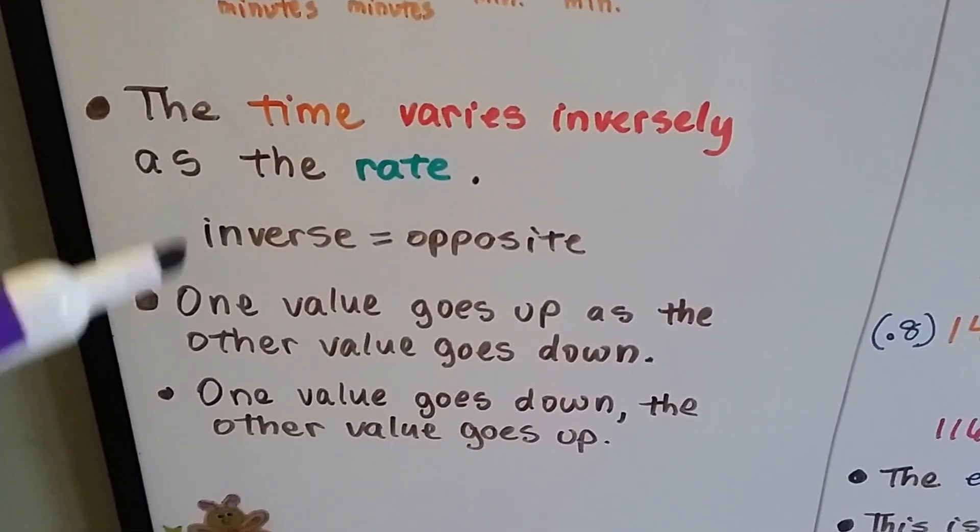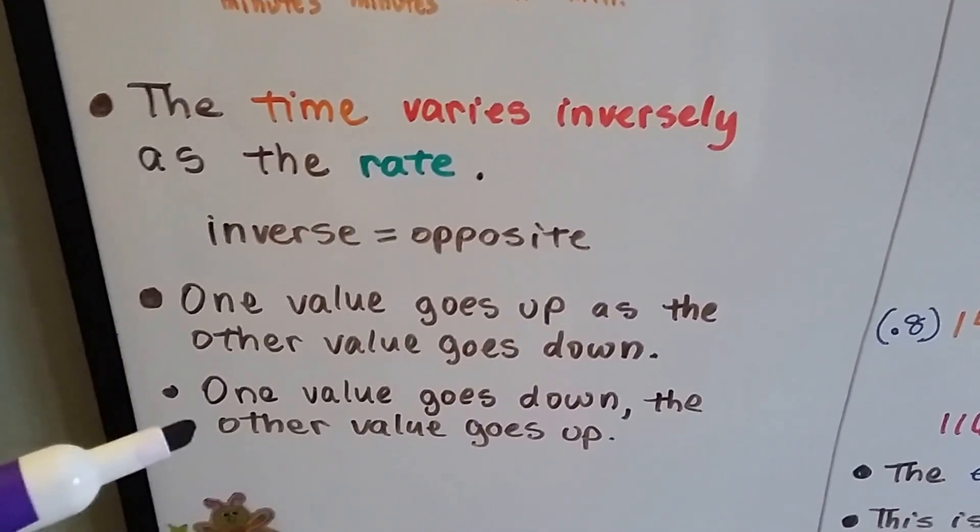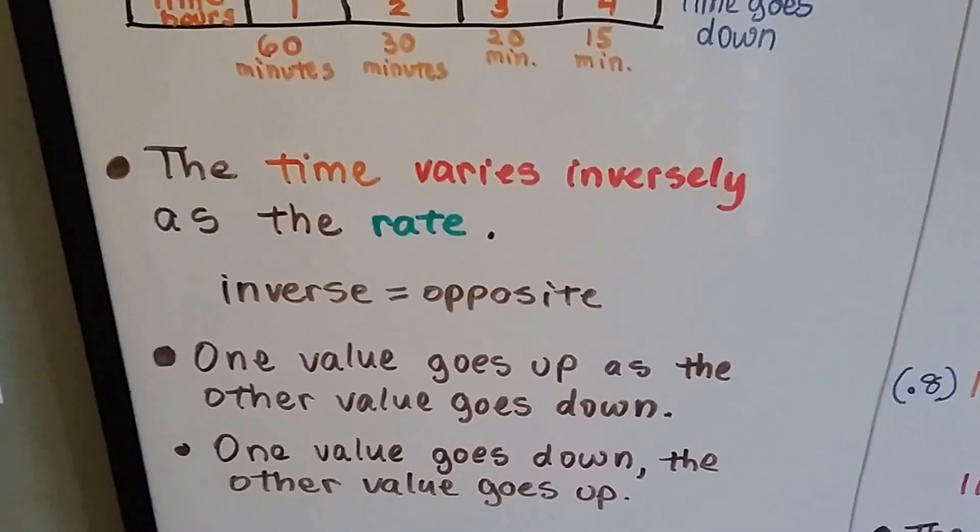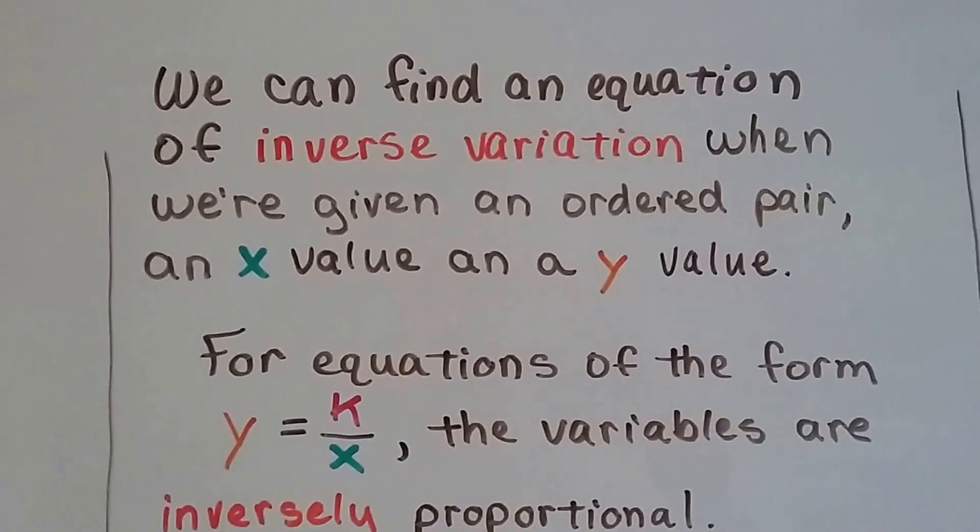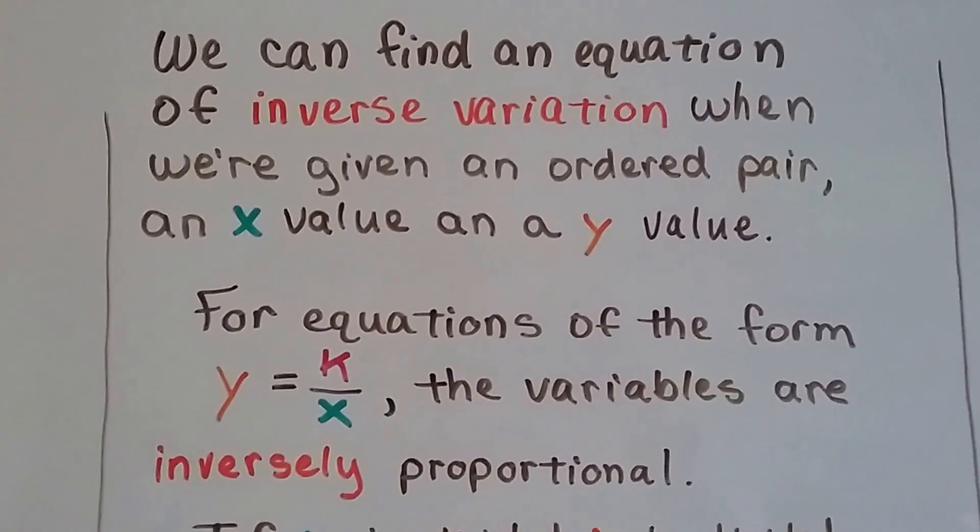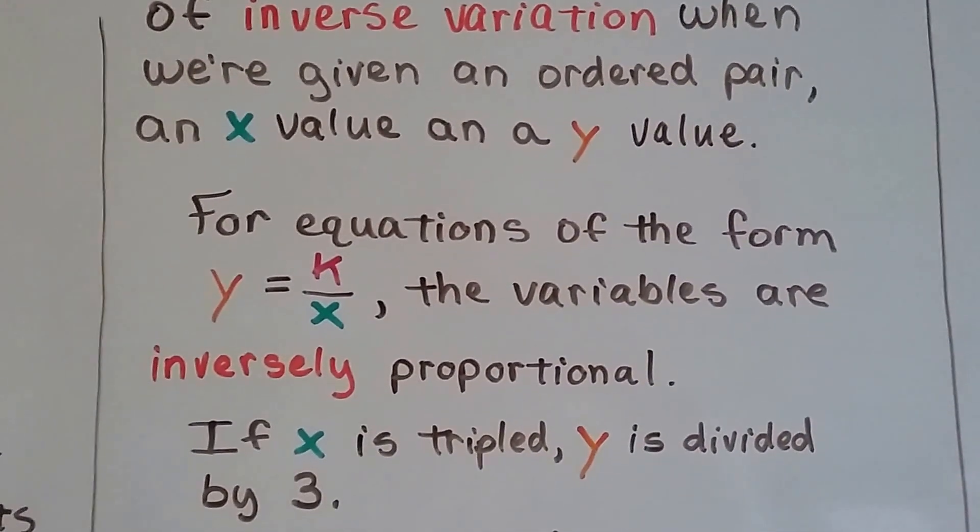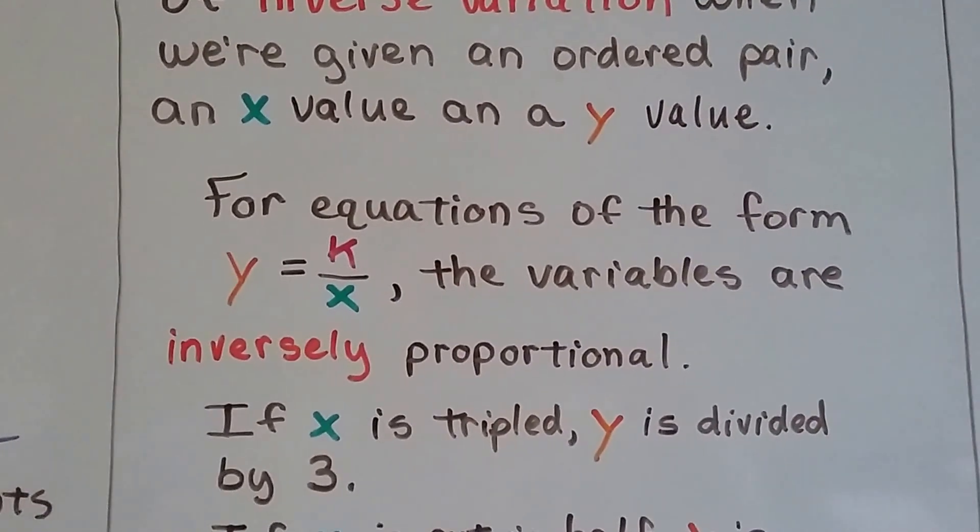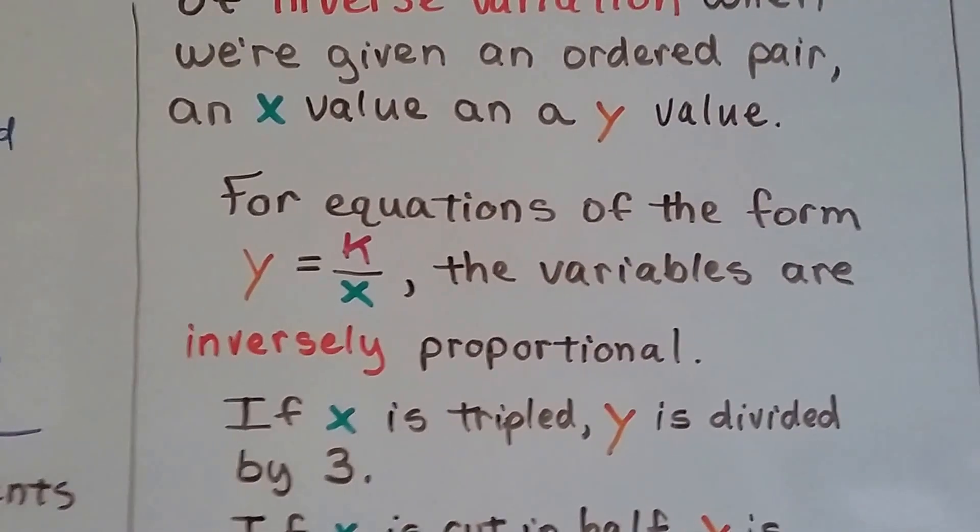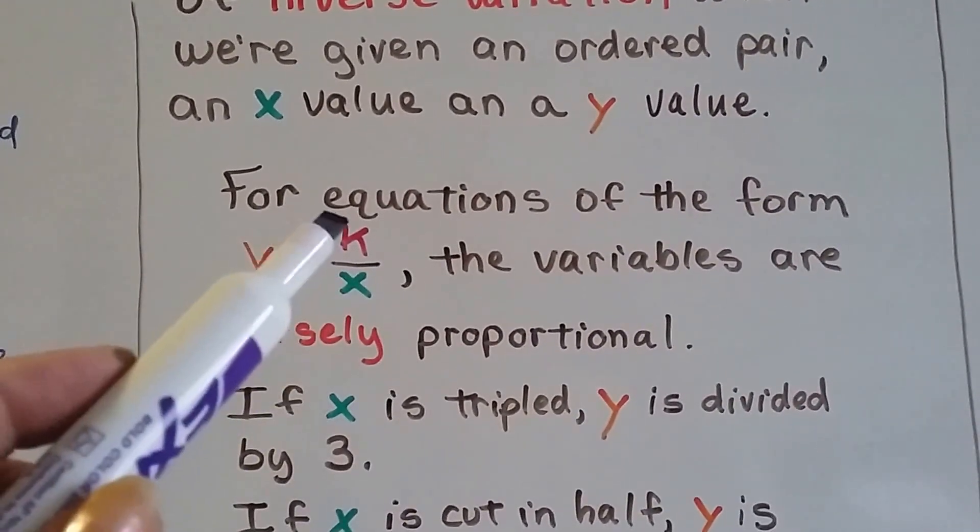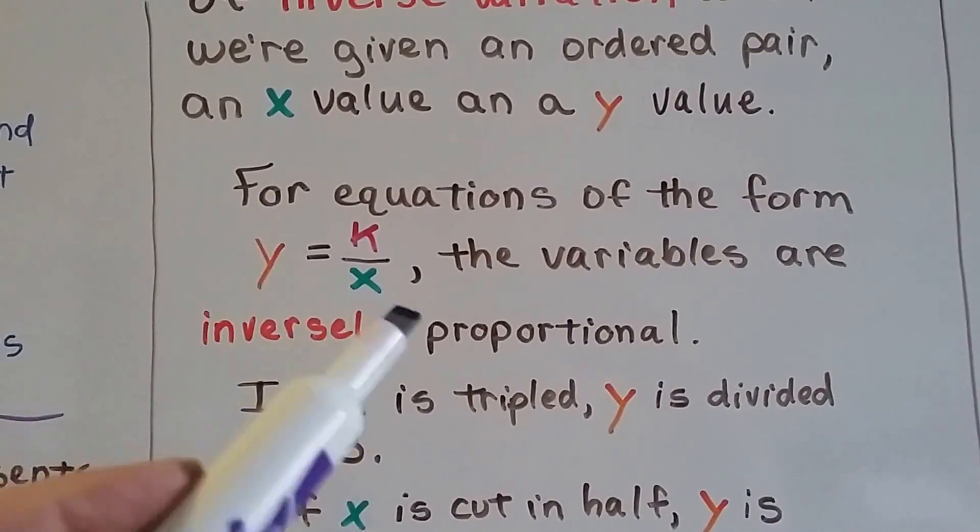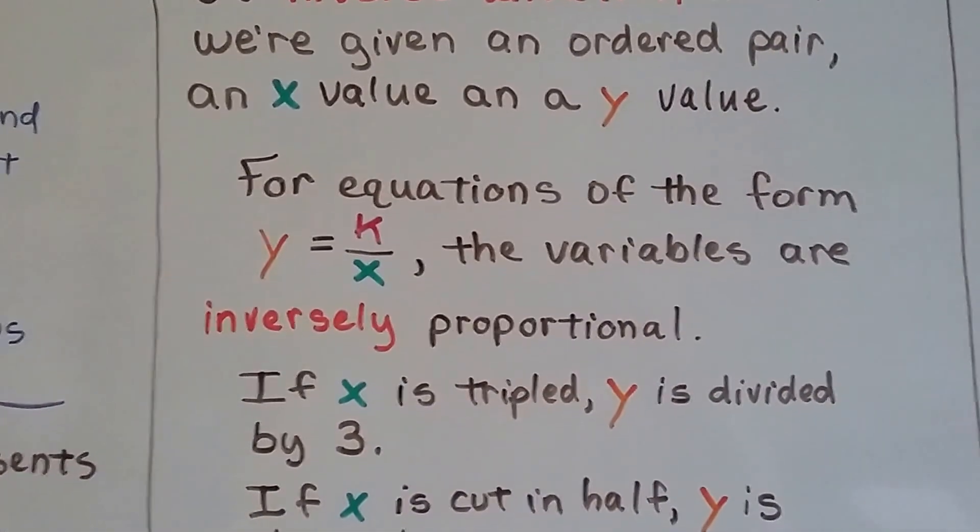So as one value goes up, the other value goes down, or one value goes down as the other value goes up. They inversely affect each other. We can find an equation of inverse variation when we're given an ordered pair, like an x value and a y value. For equations of the form y equals k divided by x, that inverse variation, the variables are inversely proportional. So depending on what this value of k is, it's going to affect the x and y in proportion to each other.